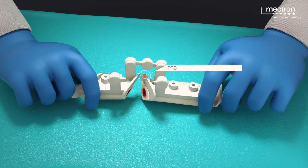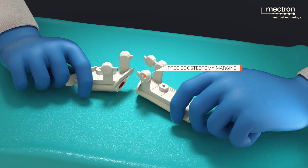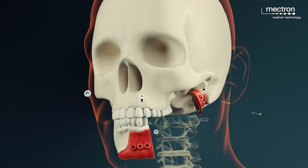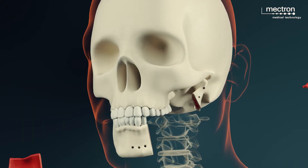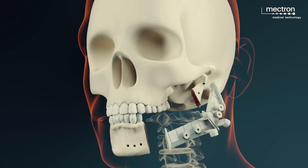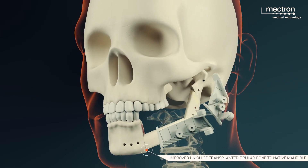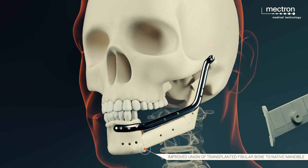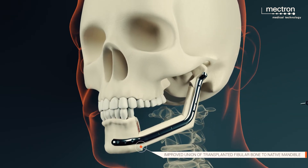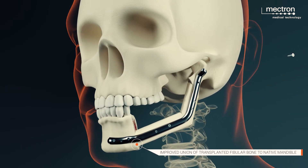The segmented fibula flap is fixed to the mandible using a reconstructive titanium plate. Vascular micro anastomoses are performed with the recipient vessels. The muscular plane, subcutaneous tissue, and skin are sutured to complete the procedure.